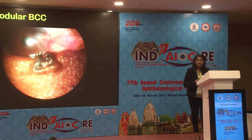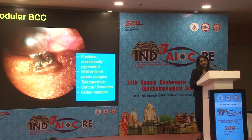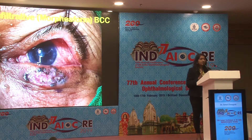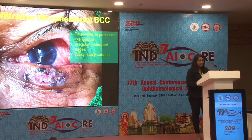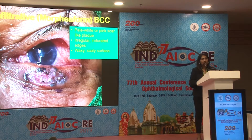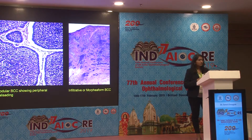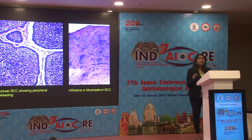Morphological types: nodular basal cell carcinoma shows a painless, occasionally pigmented nodule with fairly defined pearly whitish margins with central or peripheral telangiectasia. Central ulceration can occur chronically with rolled-out margins. The other variety is infiltrative, also called morpheaform — here you can see a pale white or pink scar which sits like a plaque on the skin with irregular indurated edges and a waxy, scaly surface. Histopathologically, the nodular type shows peripheral palisading, while the infiltrative morpheaform has a more horizontal spread involving the epidermis.